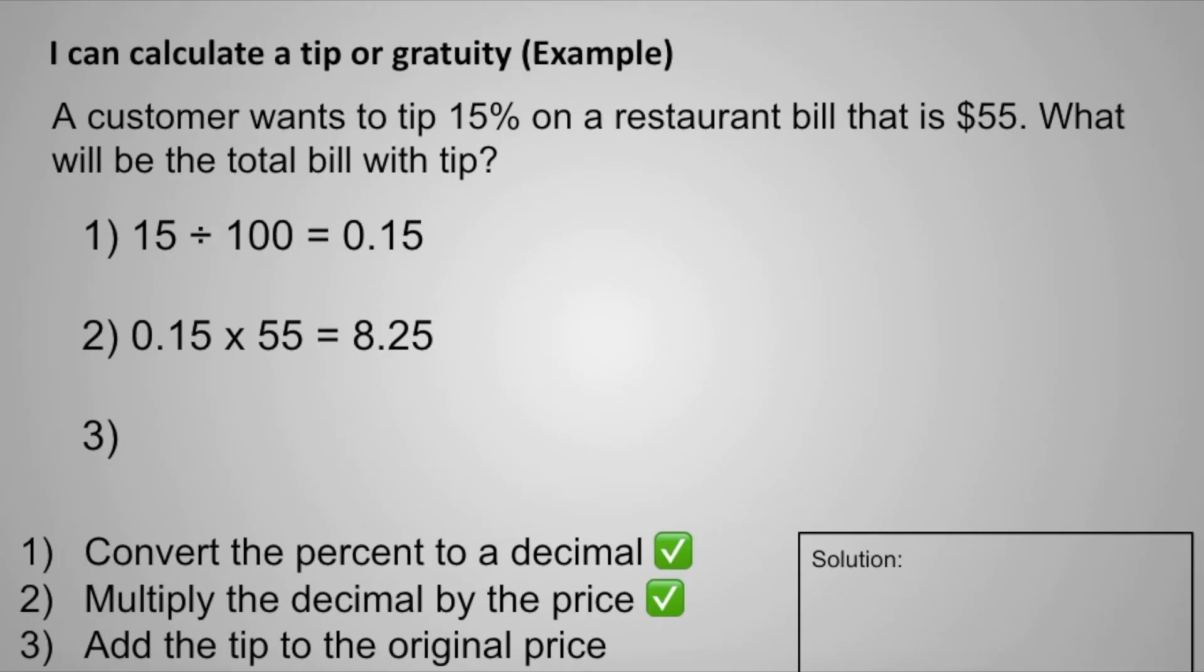And the final step is to add the tip to the original price. 55 plus 8.25 equals 63.25. So the final bill with tip will be $63.25.